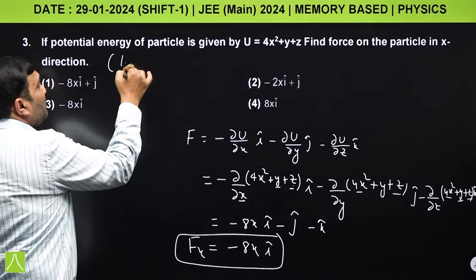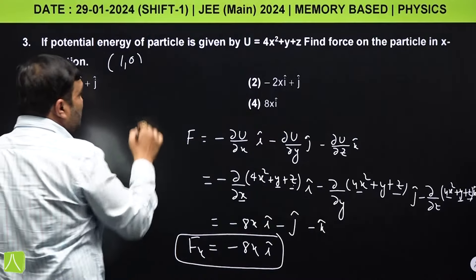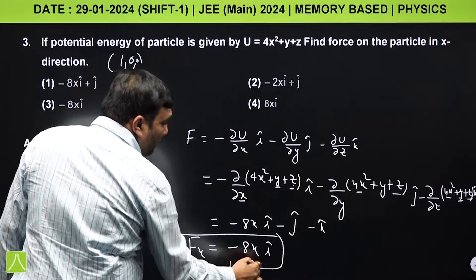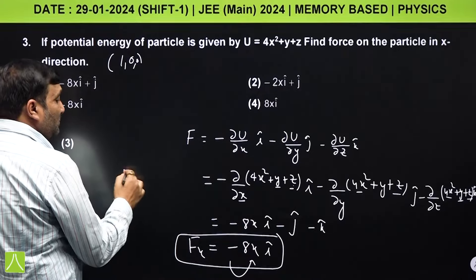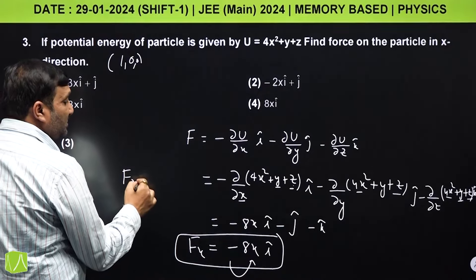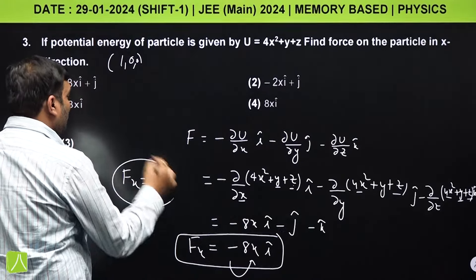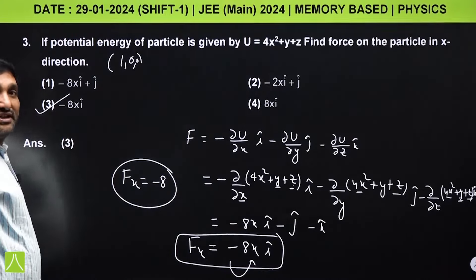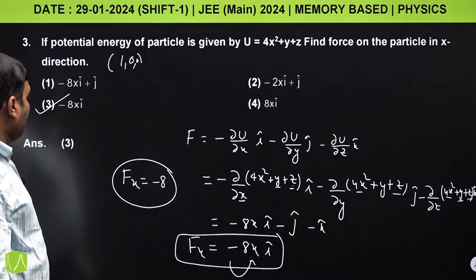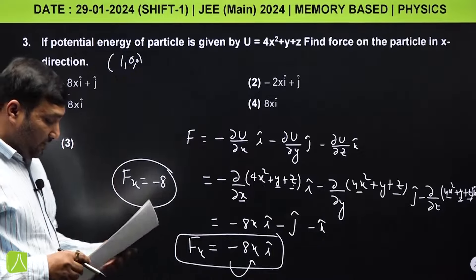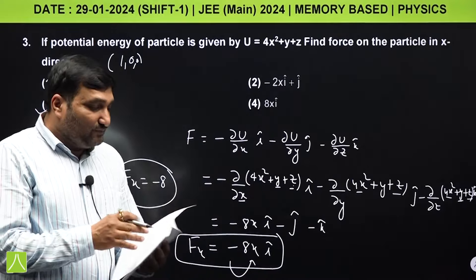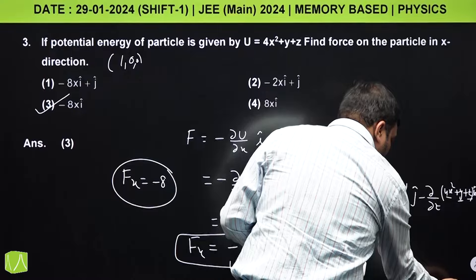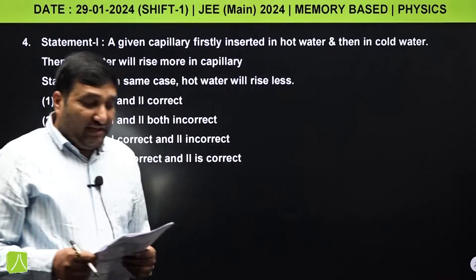A student mentioned that the force was asked at the point (1, 0, 0). If that is the case, substituting x = 1 gives Fx = −8 N. According to the options, the correct answer is −8xî newton, or −8 N at x = 1.